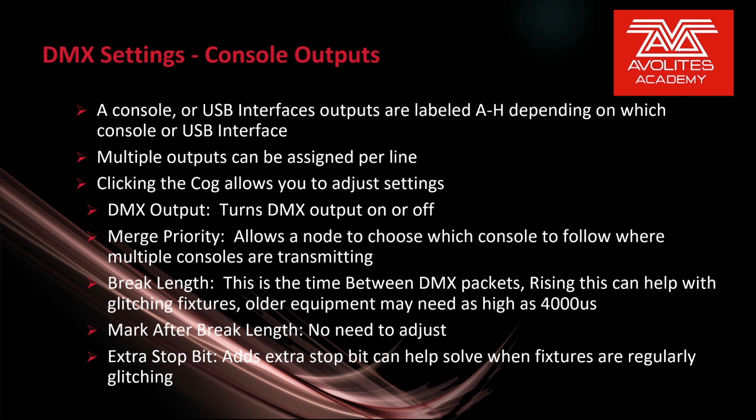Break length is the time between DMX packets. Raising this can help with glitching fixtures — all equipment may need to be as high as 4,000 microseconds. Mark after break length: there's usually no need to adjust this. Extra stop bit adds an extra stop bit — this can help solve issues when fixtures are regularly glitching.